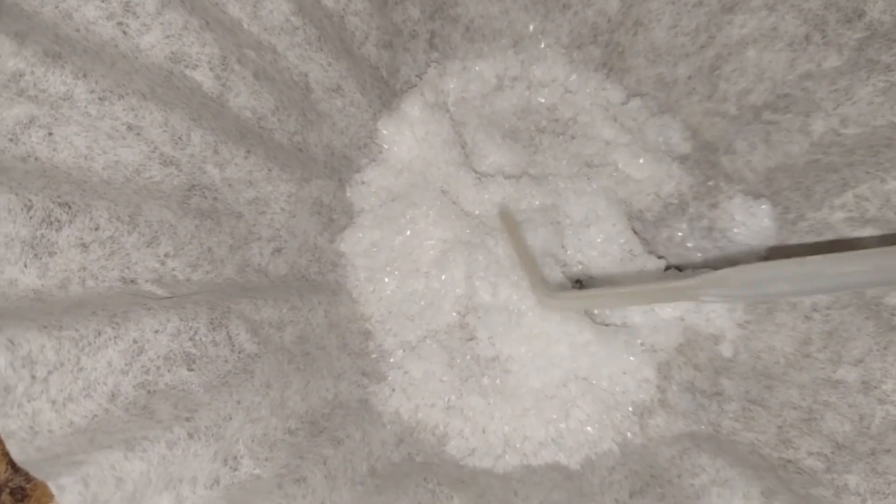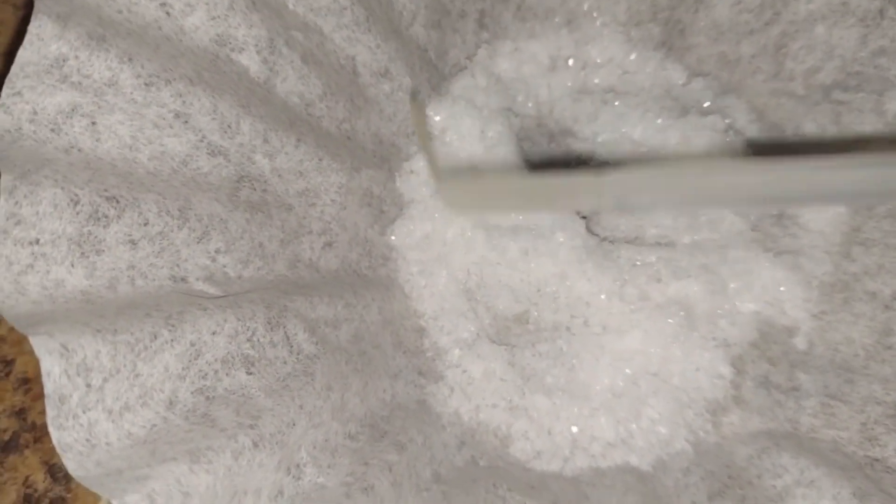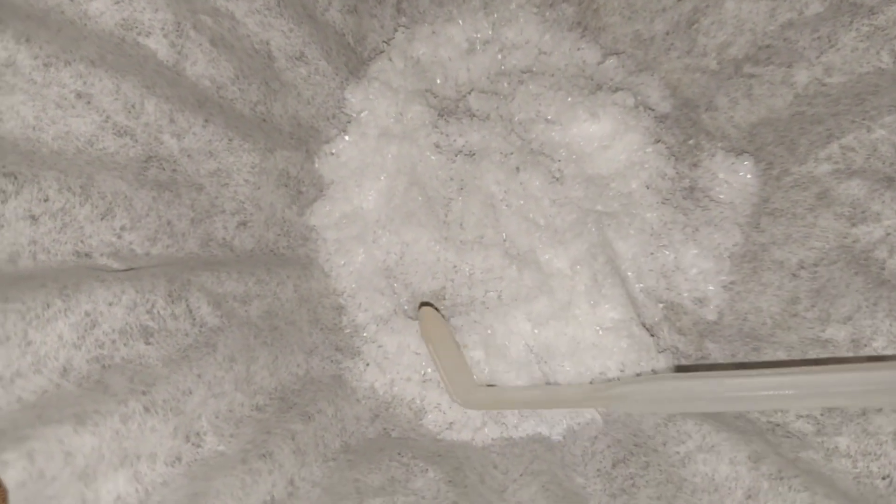And here we have our final dried product, our potassium persulfate. So I plan on using this for a couple of things. One of them is to test some flash powders with it, and the other one is to make some concentrated hydrogen peroxide.